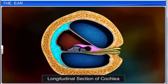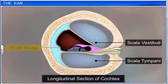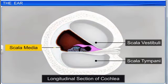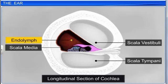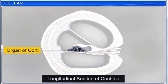The space between the scala vestibuli and scala tympani is called the scala media, and is filled with endolymph. The fluids in the labyrinth cushion the soft structures and conduct waves from the middle ear to the organ of Corti.